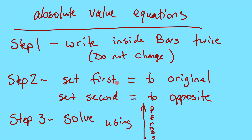Step 2: you set the first one equal to whatever the original is equal to — if it's equal to 2, you set it equal to 2; if it's equal to 4, you set it equal to 4. The second one, you change it to the opposite. So if it was equal to 6, you set the second one equal to negative 6. Step 3: you solve both using PEMDAS in reverse.